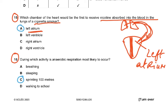Question 16: During which activities is anaerobic respiration most likely to occur? Breathing, sleeping, sprinting. It has to be strenuous exercise. Heavy exercise, strenuous exercise means sprinting 100 meters. So that was the answer C.